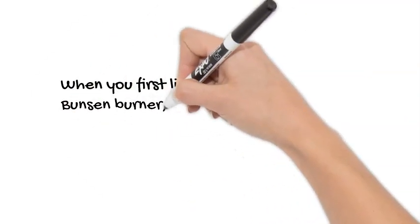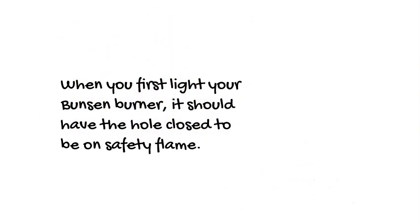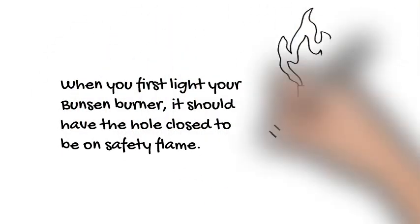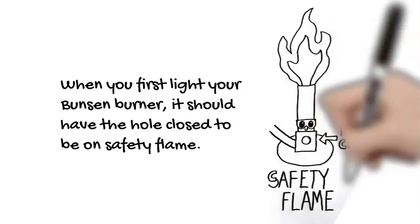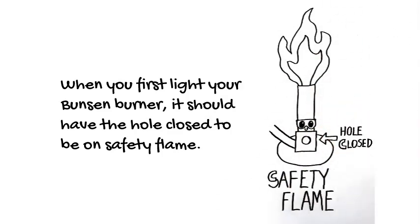Before you light your Bunsen burner, make sure the air hole at the bottom of the barrel is closed. This will produce what's called the safety flame, which is orange and easy to see.